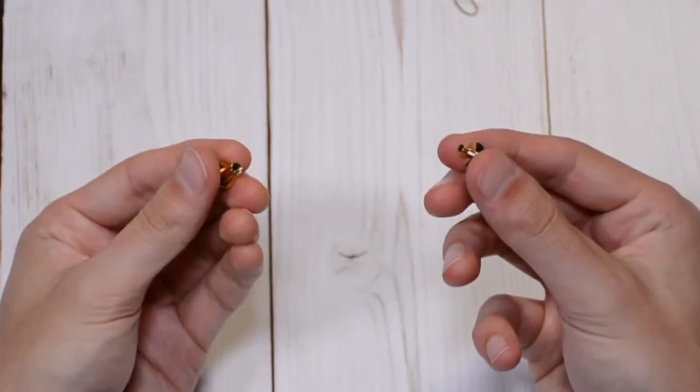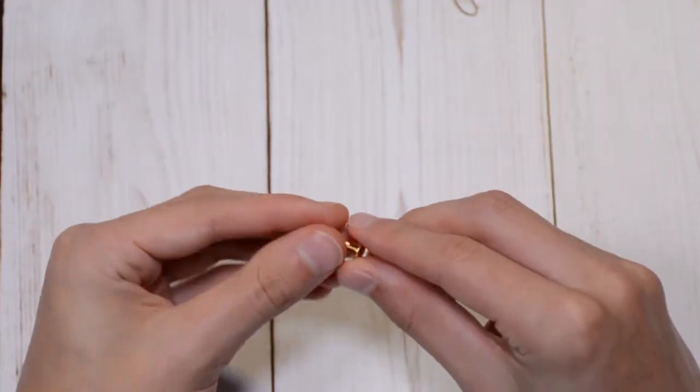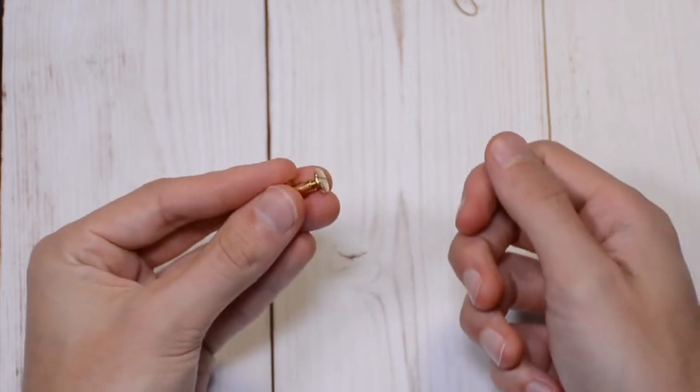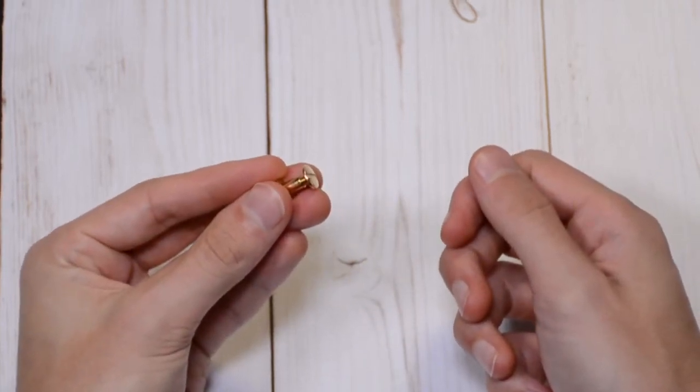The screws are manufactured from two parts, a male and female component that simply twists together. Screws can be tightened by hand.